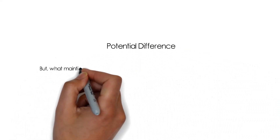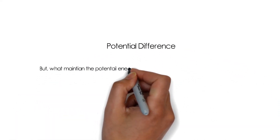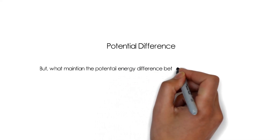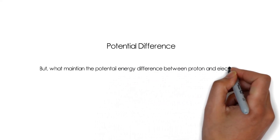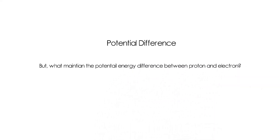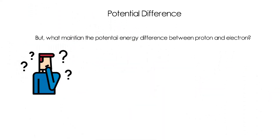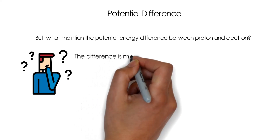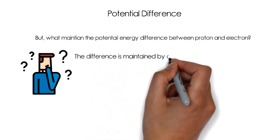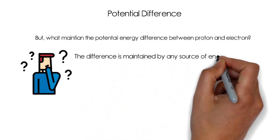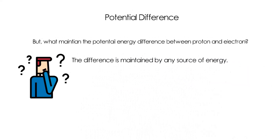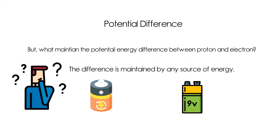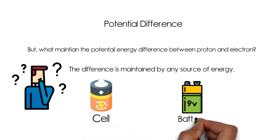A question arises: what actually maintains the potential energy difference between protons and electrons? The answer is simple — it is the source of energy. Any source of energy present in the electric circuit will maintain the potential difference between protons and electrons. This could be a cell, or a collection of cells which is known as a battery.